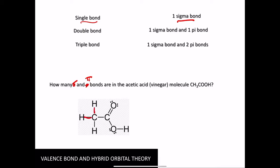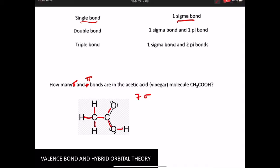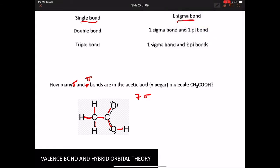All right, one, two, three, four, five, six, seven. Seven sigma bonds. And how many pi bonds? Surely we need another color for this. Let's go with black. And there's my pi bond, one pi bond.